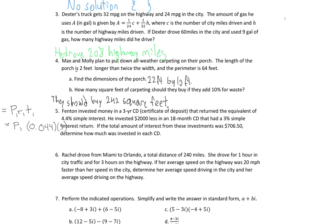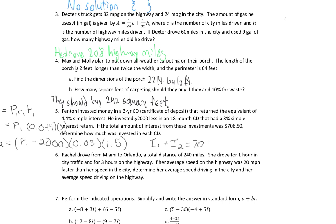For the second CD, Fenton invested $2,000 less, so P2 equals P1 minus 2,000. Therefore I2 equals (P1 minus 2,000) times 0.03 times 1.5. I used 1.5 instead of 18 because time needs to be in years — 18 months is 1.5 years. We also know the total interest from both investments was $706.50, so I1 plus I2 equals $706.50.